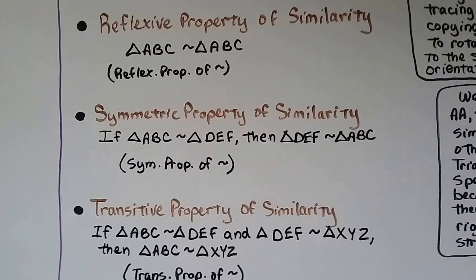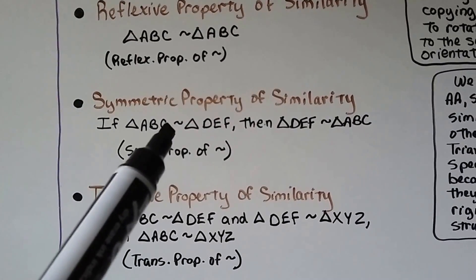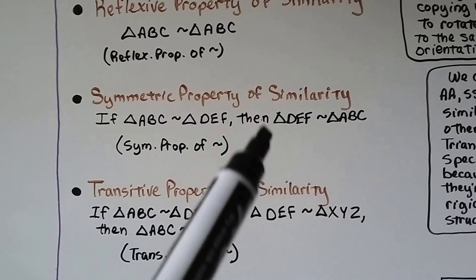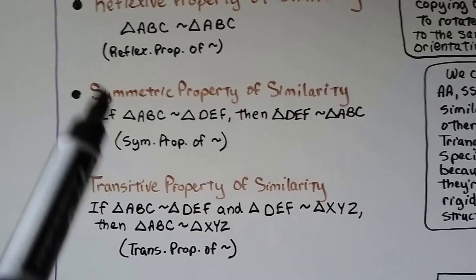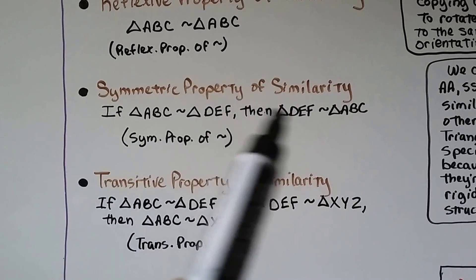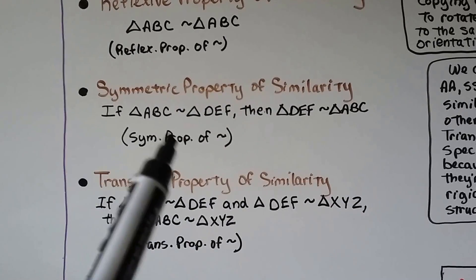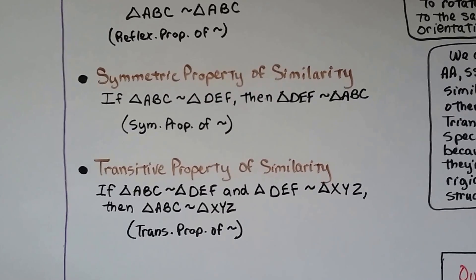The symmetric property of similarity is if triangle ABC is similar to triangle DEF, then DEF is similar to ABC. It's symmetric. This on the outside, this on the inside. We can write symmetric property of similarity for geometric notation in a proof.